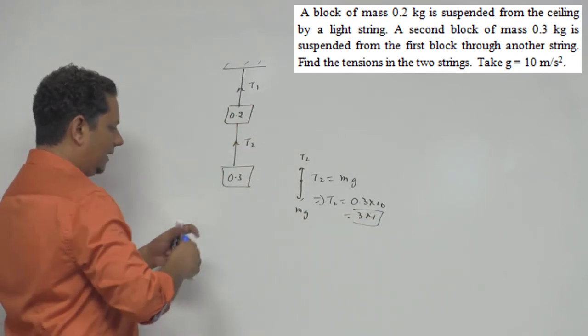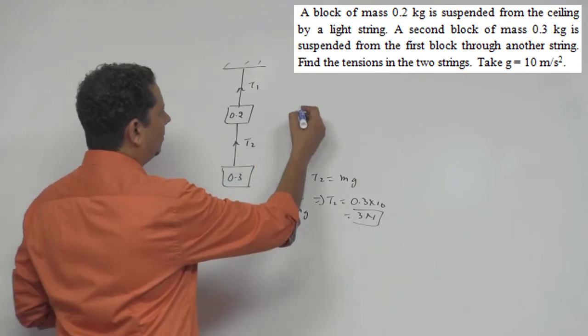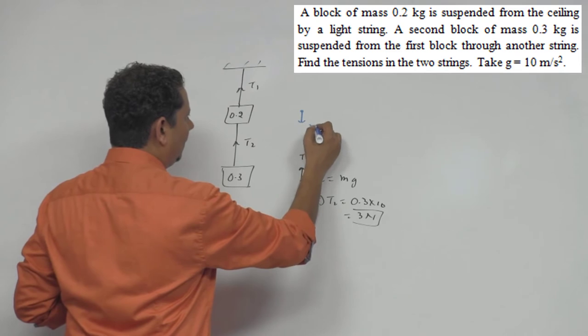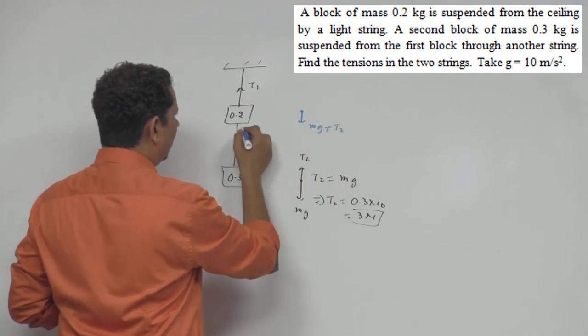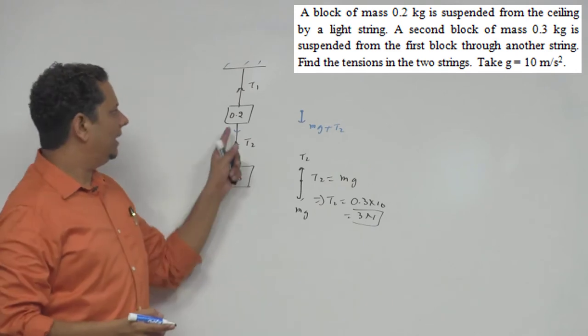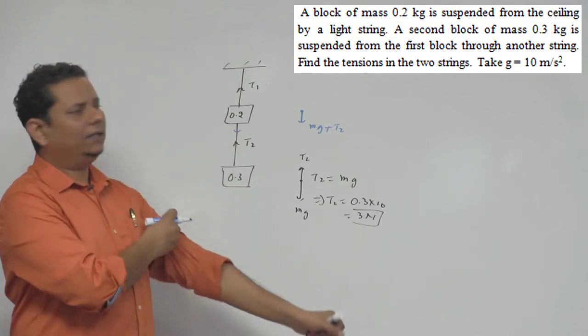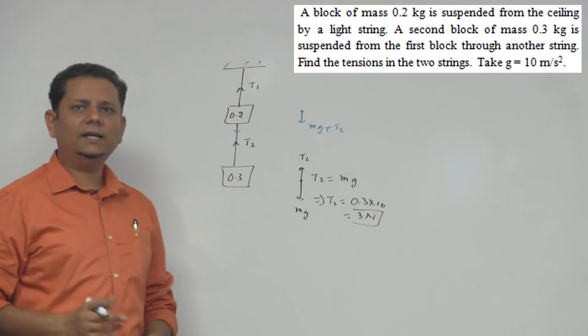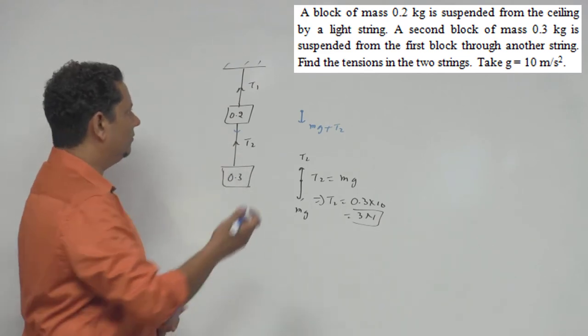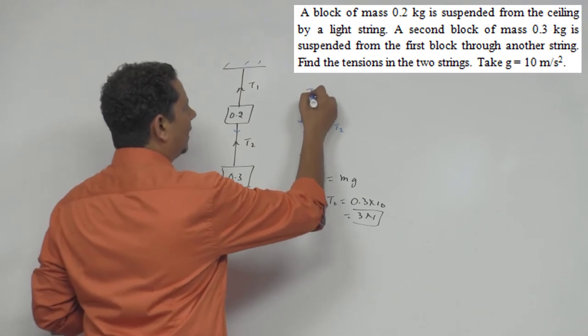Now, इसकी अगर हम बात करेंगे, इसका FBD बनाएंगे, so इसका free body diagram बनेगा. नीचे आपके लग रहा है इसका Mg plus T2, क्योंकि इस direction में T2 इसको नीचे लग रहा है. और उपर यहाँ पर आपका force लग रहा है T1.